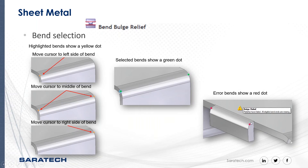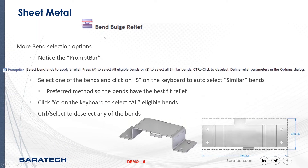If it's a bad bend end, this is telling you that you need a relief. Always look at the prompt bar with the bend bulge release, because it will tell you to select the bend end to apply a relief, press A to select all eligible bends, or S to select similar bends, or control-click to deselect, and define the relief parameters in the options dialog. The software is always going to tell you exactly what to do.